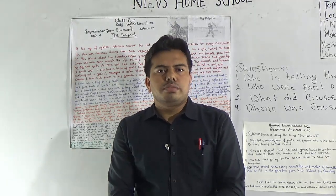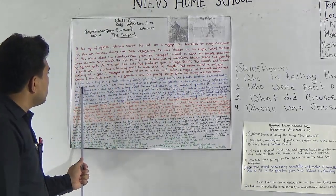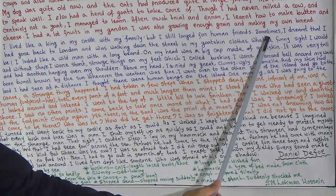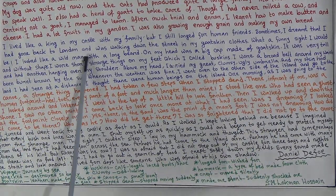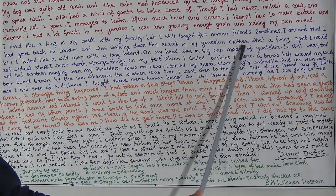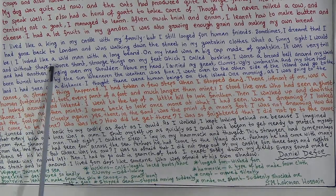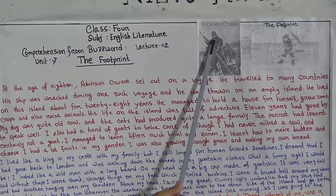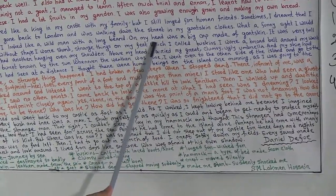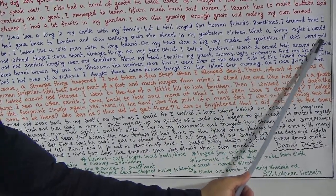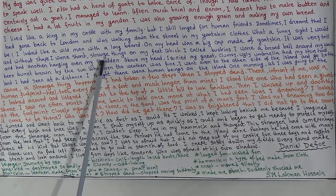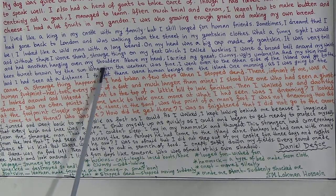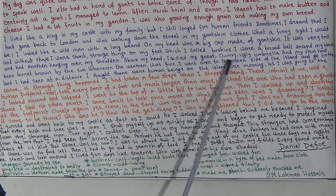'I lived like a king in my castle with my family, but I still longed for' — longed for means wished for — 'human company and friends. Sometimes I dreamed that I had gone back to London and was walking down the street in my goatskin clothes. What a funny sight I would be! I looked like a wild man with a long beard. On my head was a big cap made of goatskin — very tall and without shape. On my feet I wore strange things which I call buskins. I had a belt around my waist and another hanging over my shoulder. Above my head I carried my great clumsy ugly umbrella.'